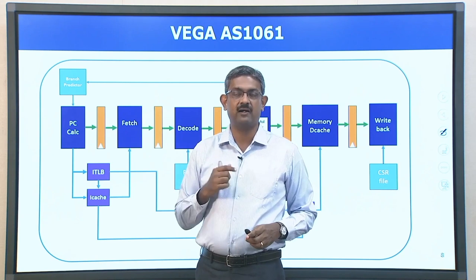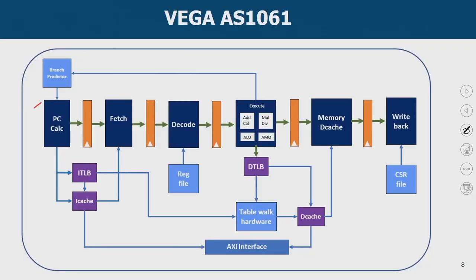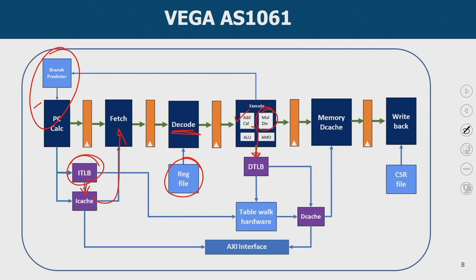The Vega AS series uses a 6-stage pipeline — one more stage than the basic 5-stage RISC pipeline. Stage 1 is PC calculation, connected to the branch predictor. Stage 2 is fetch: the PC goes to the instruction TLB, then to the I-cache from which fetching happens. Stage 3 is decode, where operands are read. Stage 4 is execute, which handles address calculation for load/store instructions or other ALU operations. Stage 5 is memory access via the data TLB and data cache for load/store instructions. Stage 6 is write back, updating registers and the AXI interface handles external IO communication.